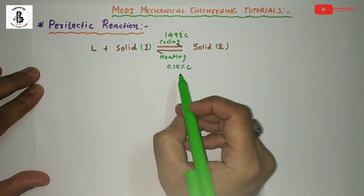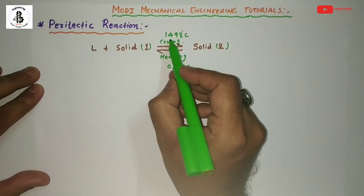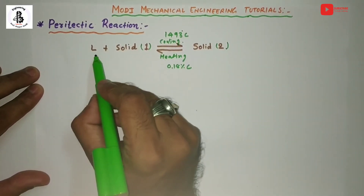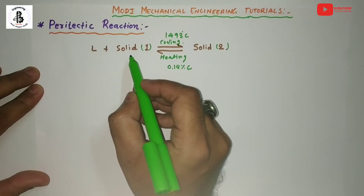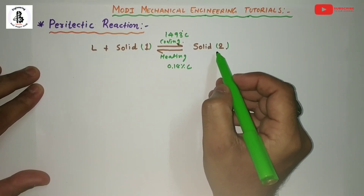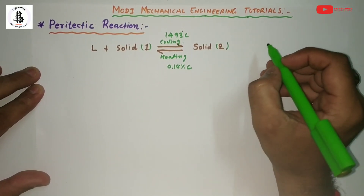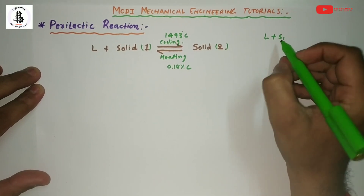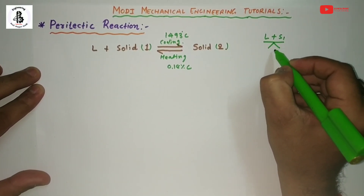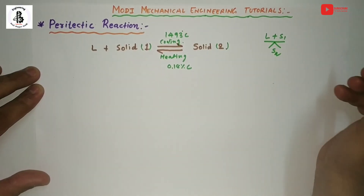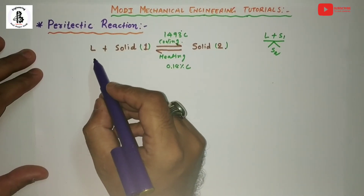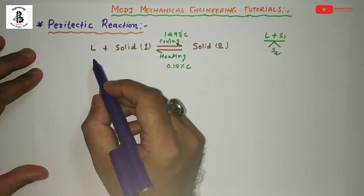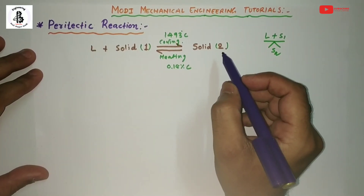In simple terms, for the iron-carbon diagram at 1493 degrees centigrade with 0.18 percentage of carbon, liquid plus one solid phase converts into a new solid. The symbolic representation shows liquid plus solid S1 transforming into new solid S2. In simple terms: liquid plus solid converts into a new solid.